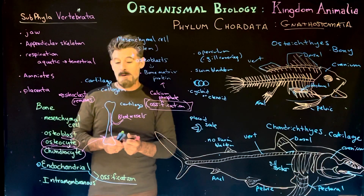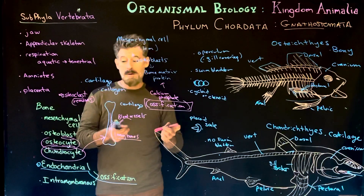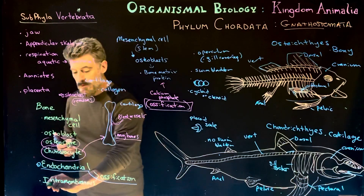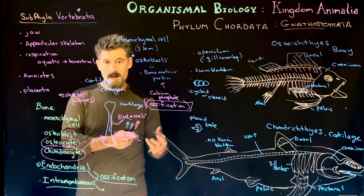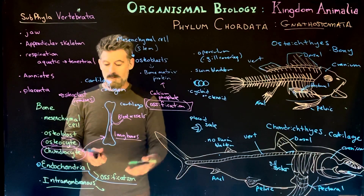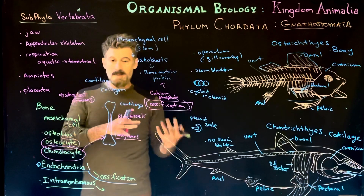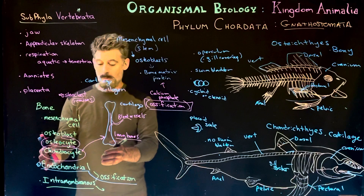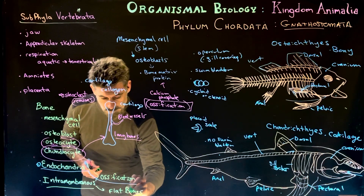Endochondral ossification is how the long bones form — even in our own bodies. There's another process found in the bones of our skull called intramembranous ossification. Instead of cartilage forming first, a different, much thinner type of matrix forms first, and then osteoblasts come in and secrete the bone matrix. This is usually a much faster process because you don't have to build everything out of cartilage, take it away, and replace it. Instead, a membranous structure is laid down first and then mineralization happens on top of it. Intramembranous ossification is generally associated with flat bones, like the bones of the skull.